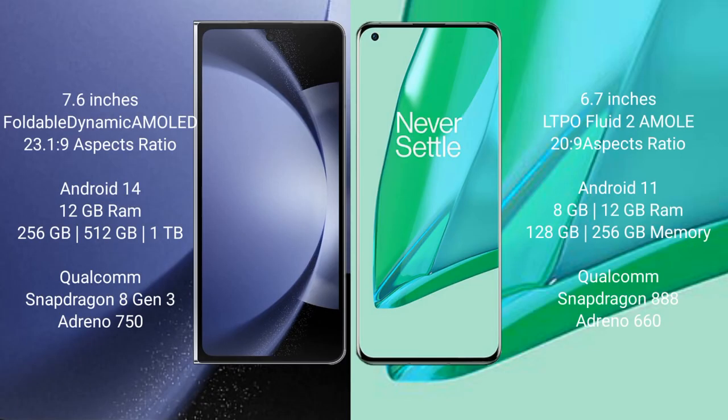Samsung Galaxy Z Fold 6 comes with a 7.6-inch foldable Dynamic AMOLED display and an aspect ratio of 26.1x9. OnePlus 9 Pro has a 6.7-inch LTPO AMOLED display and an aspect ratio of 26.9.